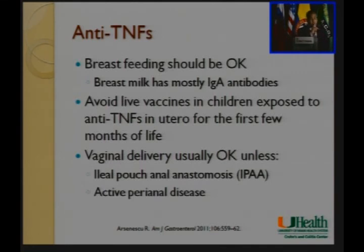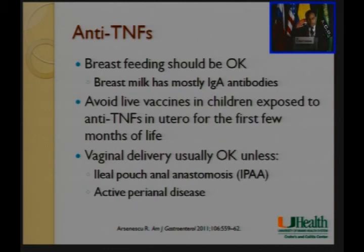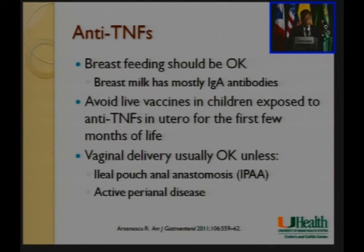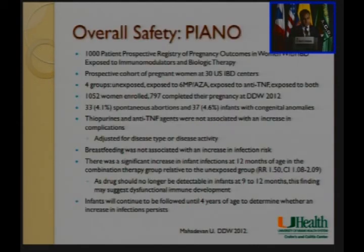Breastfeeding should be fine since breast milk is mostly IgA. Importantly, you should avoid live vaccines in the child for the first three to six months after delivery, as anti-TNF does cross over to a small degree. Regarding vaginal delivery versus C-section: unless you have an ileal pouch anal anastomosis or active perianal disease, it is safe to undergo vaginal delivery. I'll leave you with one final piece of data — just presented two months ago at DDW — the PIANO study.